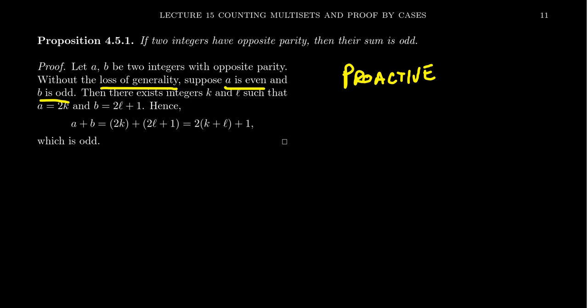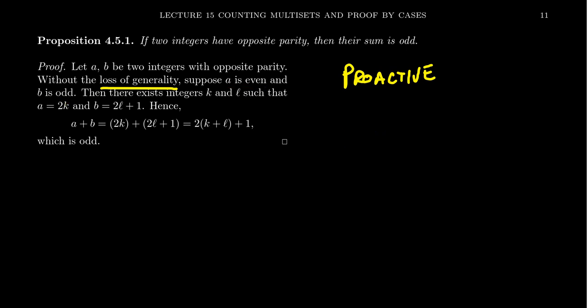The extra assumption is that a is even and b is odd. This doesn't lose generality because the other case — a odd, b even — is handled the same way. Since addition is commutative, whether the odd number is first or second makes no difference whatsoever. So we assume a is the even one: if a were the odd one, we could provide basically the same argument. We use 'without loss of generality' to acknowledge multiple cases while choosing one specific case to illustrate the general argument.